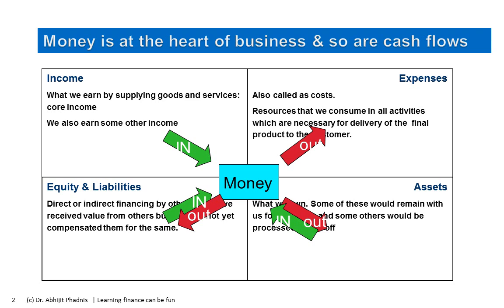This is a slide I discussed in one of the earlier videos. The three green arrows stand for inflows and the three red arrows stand for outflows. The major reasons for inflows are: income-earning activities (collecting from customers), fundraising activity, and sale of assets. Similarly, outflows happen for paying expenses to vendors, procurement of assets, and paying obligations to equity owners as well as lenders.